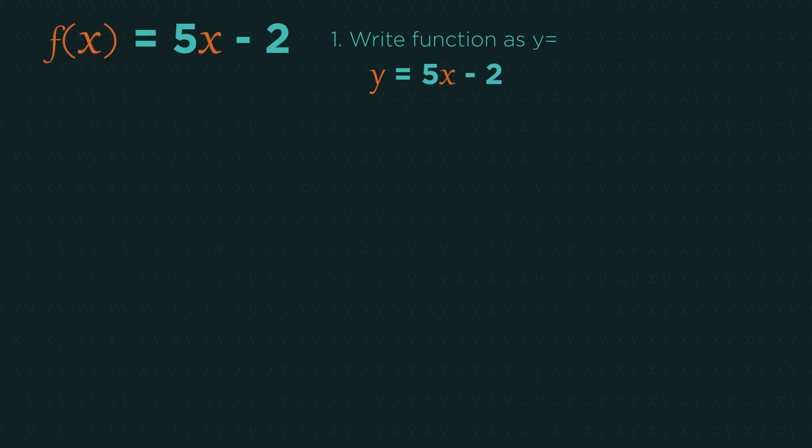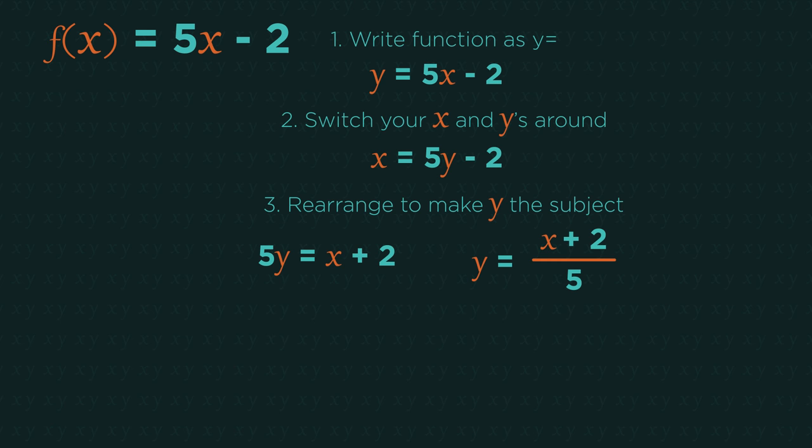Start by writing the function as y equals. Switch your x and y's around, so they just switch places. Rearrange to make y the subject. And there you found the inverse, so write it as f to the minus 1 of x.